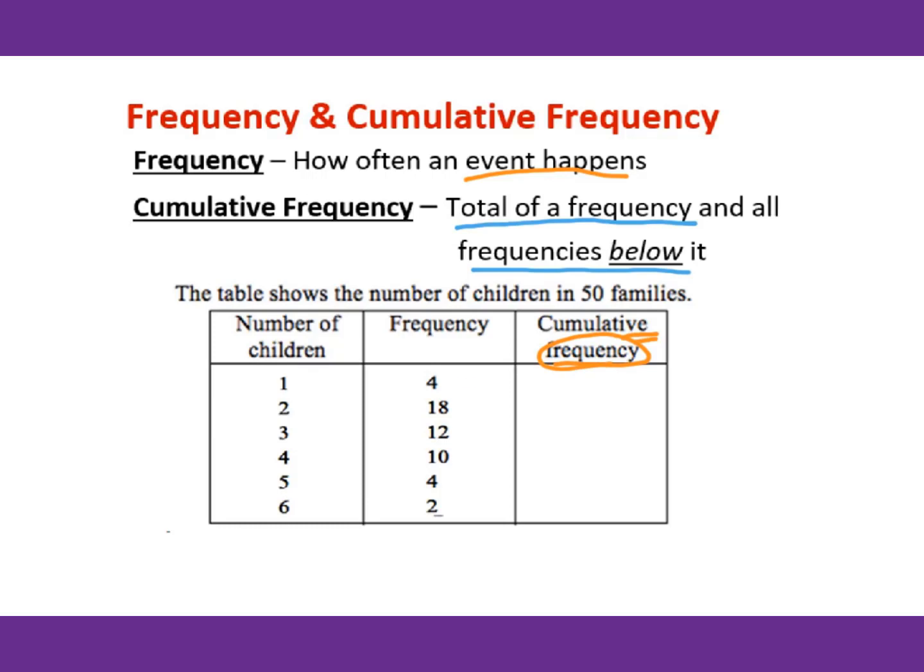For example, this table shows the number of children in 50 families. The first frequency you state because nothing you can add up. Then from 4, I add 18, that's 22. From 22, I add 12, that's 34. 34, I add 10, that's 44. 44, I add 4, that's 48. 48, I add 2, that's 50. We call this a cumulative frequency table.